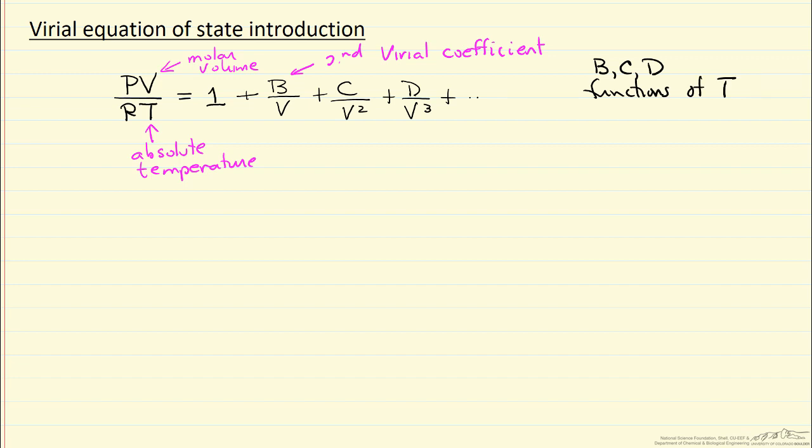So B, C, and D are functions of temperature. Now there's a theoretical basis for the Virial coefficient, but we're not going to worry about that now, and certainly this is not going to be good for all molecules, particularly not good for polar compounds.